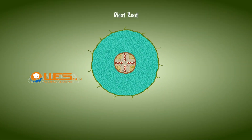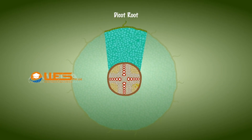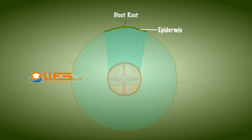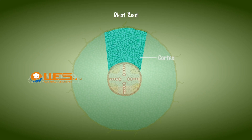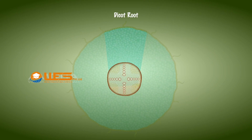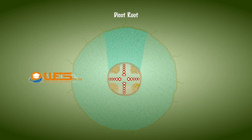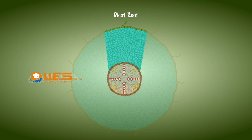Dicot root: The transverse section of the dicot root shows an outermost covering called epidermis, made up of a single layer of parenchymatous cells. The cortex consists of several layers of thin-walled parenchyma cells with intercellular spaces. The innermost layer of the cortex is called endodermis, made up of a single layer of barrel-shaped cells. Vascular bundles are less than six in number and are arranged in an alternate manner on different radii, a type of arrangement called radial.